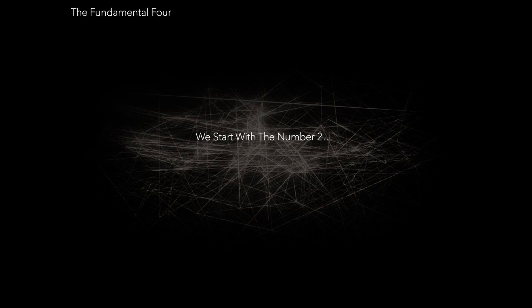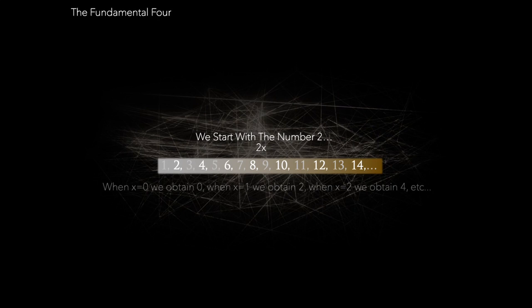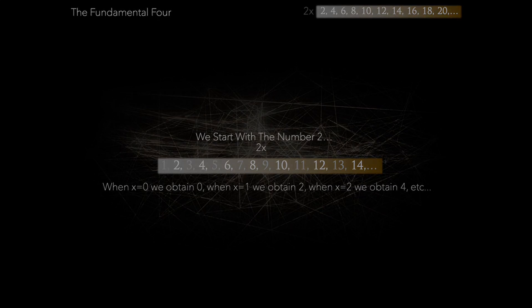We begin with the number 2, the smallest and only even prime number. Our first equation is simply 2x, generating all even numbers, 2, 4, 6, 8, and so on.